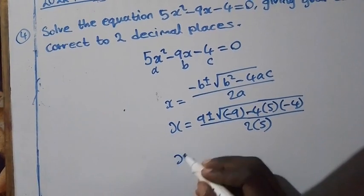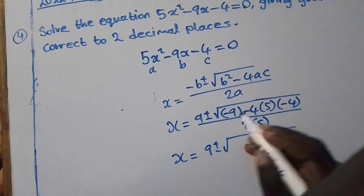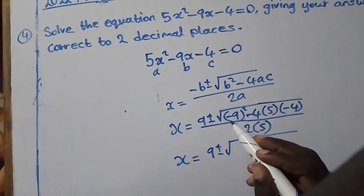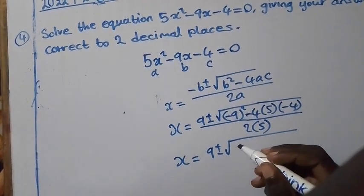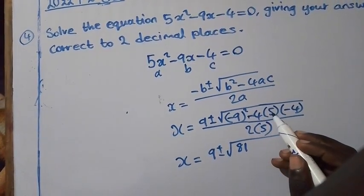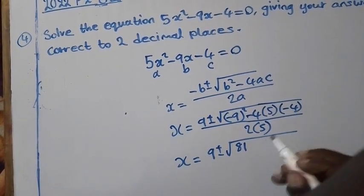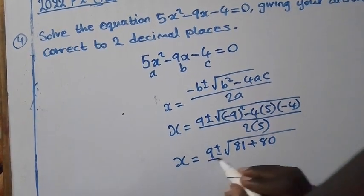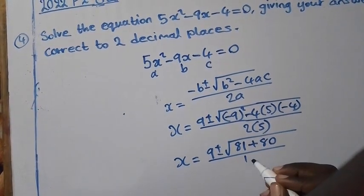So x be equal to 9, positive or negative, square root of negative 9. So open bracket negative 9 close bracket to the power 2 is positive 81. Negative 4 times 5 is negative 20. Negative 20 times negative 4 is positive 80. Over 2 times 5 is 10.